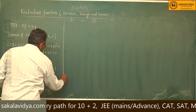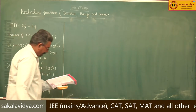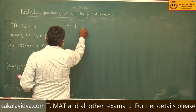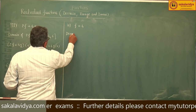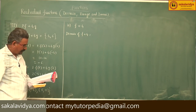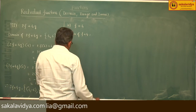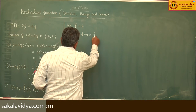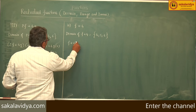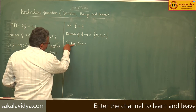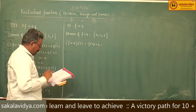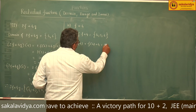Next, fourth problem: f plus 4. Domain of f plus 4 is same as domain of f only, that is {4, 5, 6}. So, f plus 4 of 4 — this 4 is a constant. We get f of 4 plus 4. f of 4 is given as 5, so 5 plus 4 equals 9.